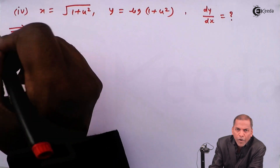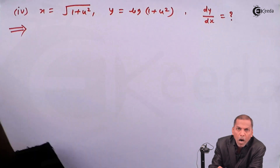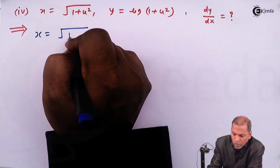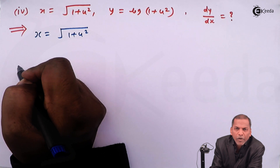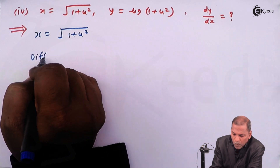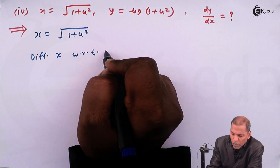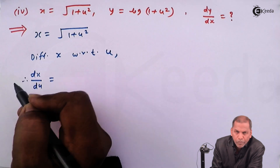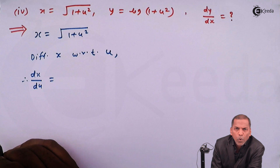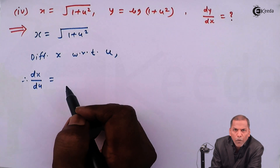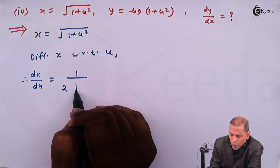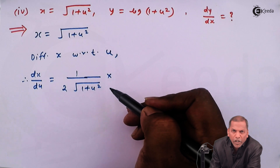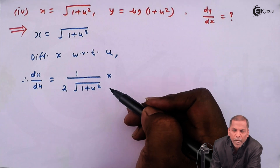The solution is quite simple. First we start from x is equal to under root of 1 plus u squared. Differentiating x with respect to u, we get dx upon du. The derivative of root x is 1 upon 2 root x. So similarly, the derivative of root of 1 plus u squared is 1 upon 2 into root of 1 plus u squared,